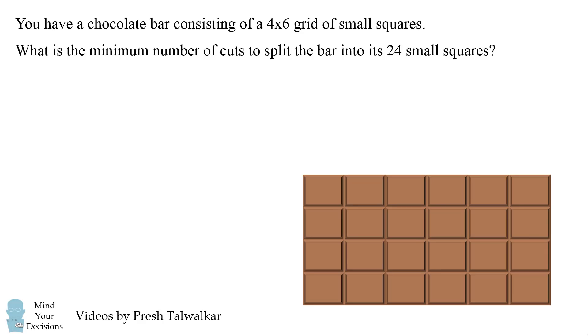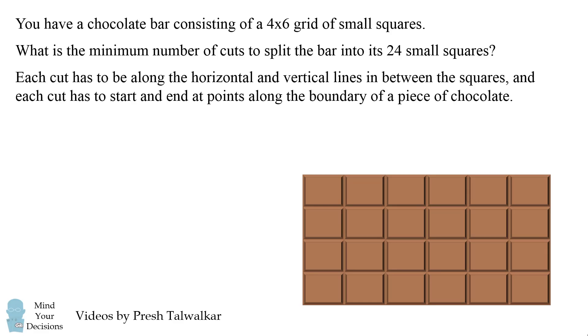Now there are some restrictions on the kinds of cuts you can make. Each cut has to be along the horizontal and vertical lines in between the squares, and each cut also has to start and end at points along the boundary of a piece of chocolate.